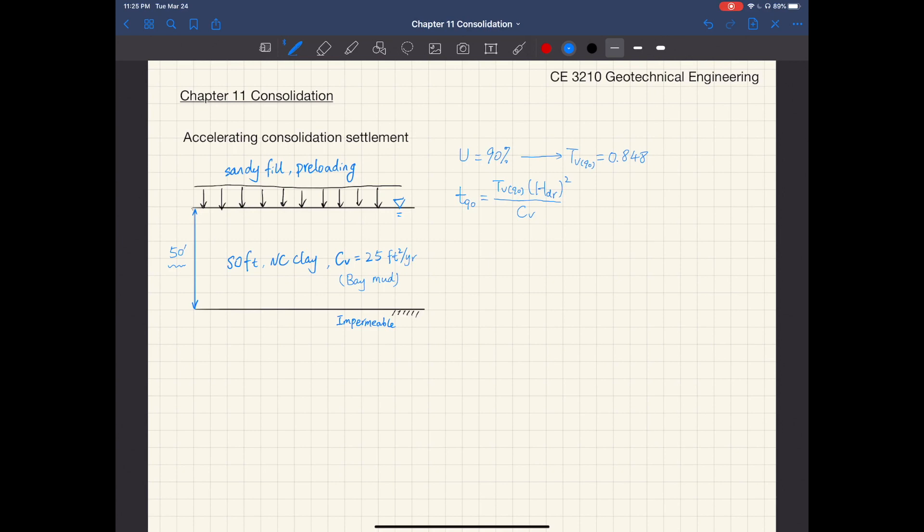If we plug in to this expression for time T, T sub V is 0.848. H_DR is the maximum drainage distance. So for this setup here, you have an impermeable layer at the bottom, so it's a one-way drainage.